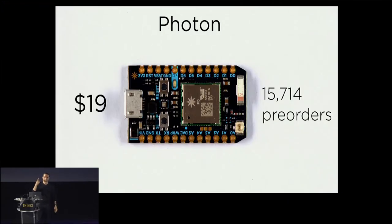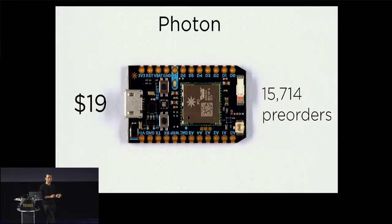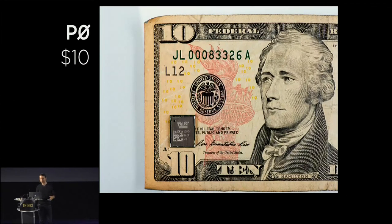The Photon is our successor to the Core. Costs half as much, works better, and no one has Wi-Fi setup problems as far as we can tell — which is a coup in this space, because Wi-Fi setup is what kills almost all consumers and turns a product into trash. We're nearing 16,000 pre-orders. It's got this little module called the P0 — our own Wi-Fi and microcontroller package — which costs $10 in any volume. You can prototype on the platform and then scale up to make 10,000 or 100,000 of these things.